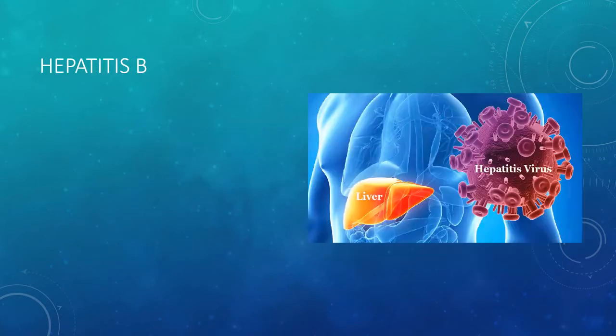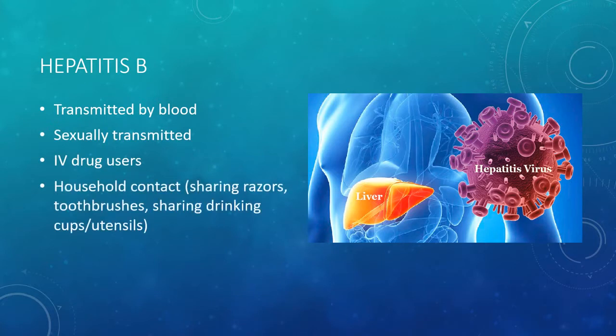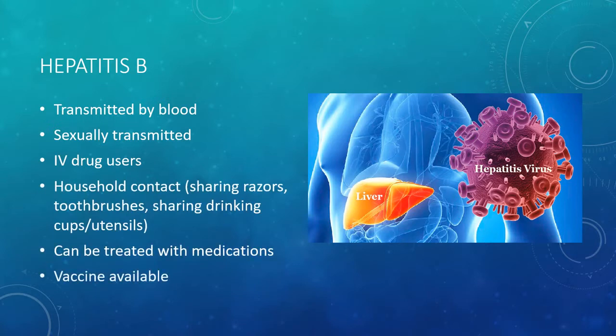Hepatitis B can be transmitted by blood, sexually transmitted, transmitted through IV drug users, through household contact such as sharing razors, toothbrushes, sharing drinking cups and utensils. It can be treated with medications and vaccines are available for Hepatitis B.